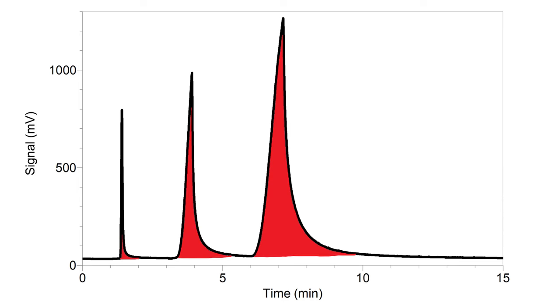The area under the peak gives us information about the concentration of the sample. More area means more concentration and less area means less concentration.